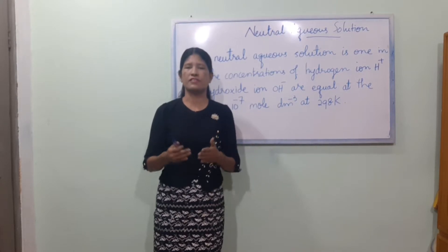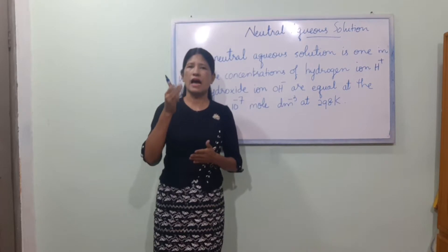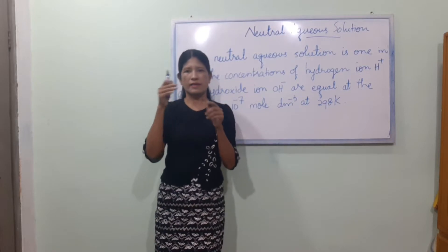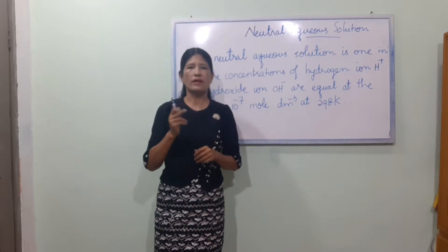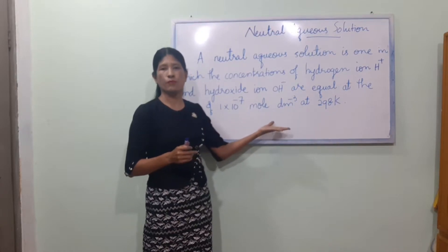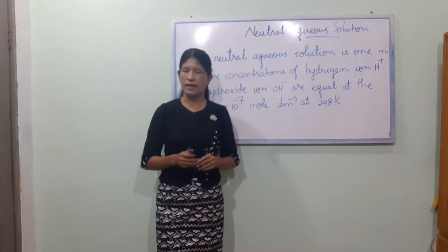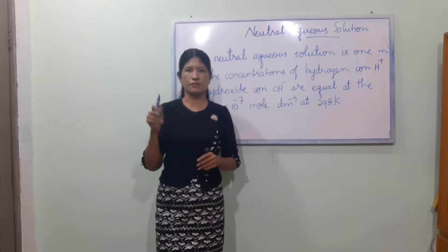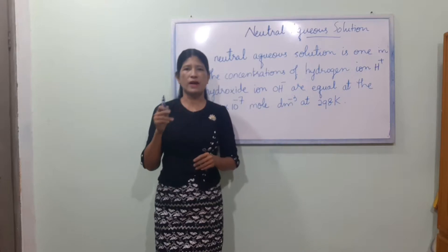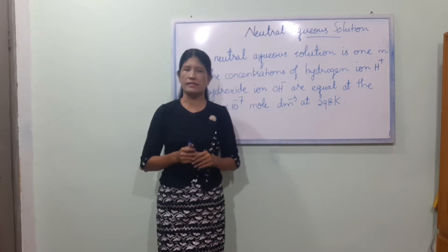The hydrogen ion concentration equals the OH⁻ ion concentration, both equal to 1×10⁻⁷. So H⁺ ion concentration in square brackets is equal to OH⁻ ion concentration, equal to 1×10⁻⁷.